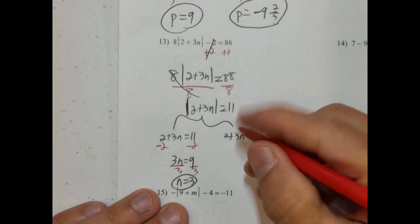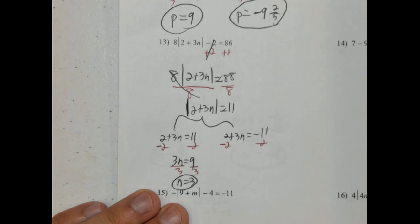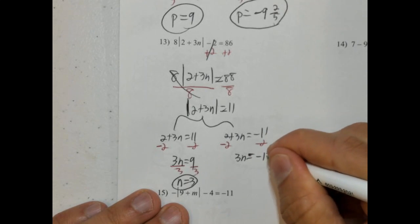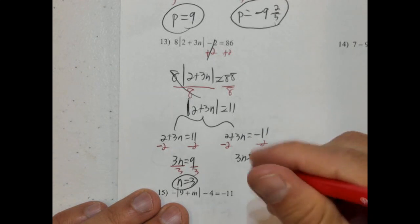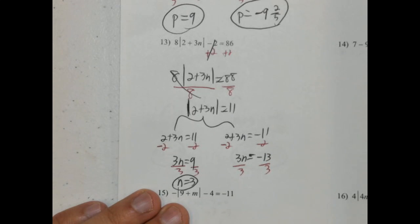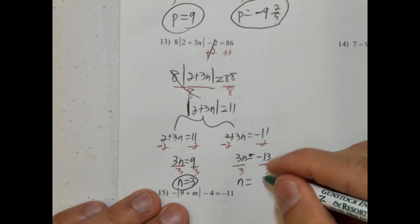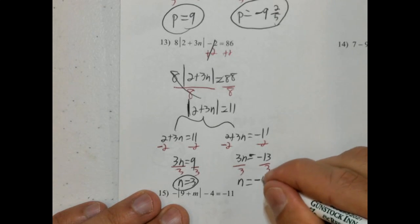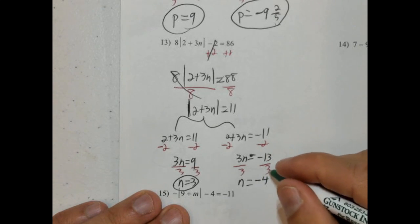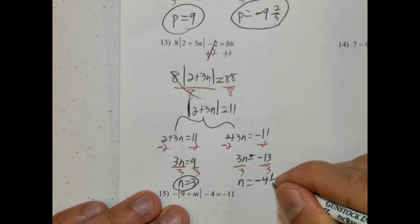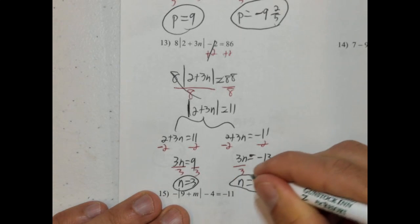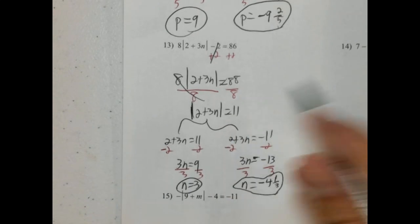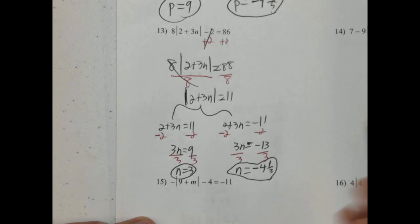For the other case: 2 plus 3n equals negative 11. Subtract 2 from both sides — 3n equals negative 13. Divide both sides by 3, and n equals negative 13 over 3, which converts to negative 4 and a third as a mixed number. Although if you were to plug this back in to check, it would be far easier to keep it as an improper fraction. So our answers are n equals 3 and negative 4 and a third.